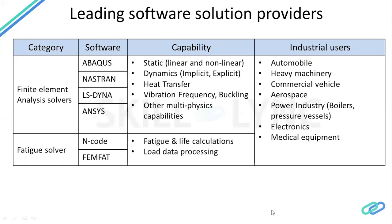For fatigue, we have nCode and FEMFAT. These are fatigue calculators. Mostly, fatigue calculators work based on the FEA solver — the major part of stress and stress-strain calculation is done in FEA software, and then using those strains and stresses we calculate fatigue in nCode and FEMFAT. The industrial users of CAE include automobiles, heavy machinery such as Komatsu, commercial vehicles including trucks and buses, aerospace, power industries such as boilers and pressure vessels, electronics, and medical equipment.